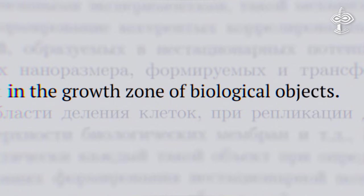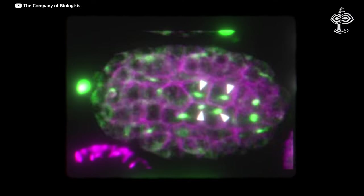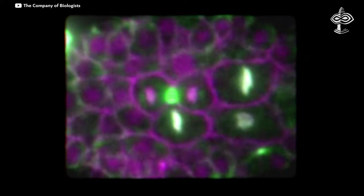which are formed and transformed in the growth zone of biological objects. For example, in the cell division area during DNA replication, on the surface of biological membranes.